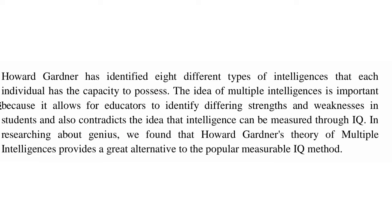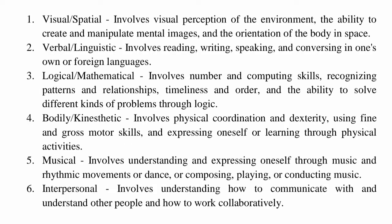In researching about genius, we found that Howard Gardner's theory of multiple intelligences provides a great alternative to the popular measurable IQ method. First, visual-spatial intelligence involves visual perception of the environment, the ability to create and manipulate mental images, and the orientation of the body in space.